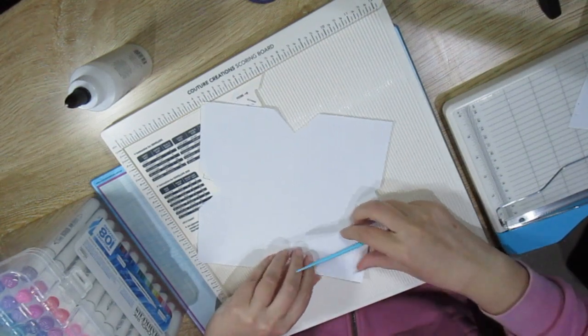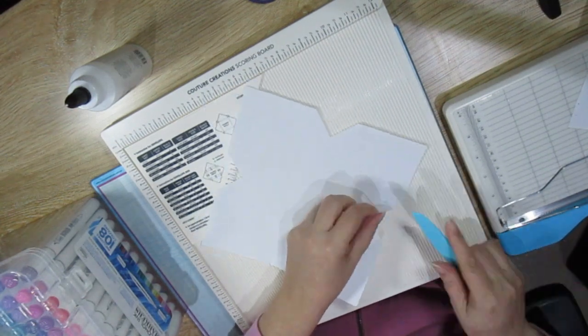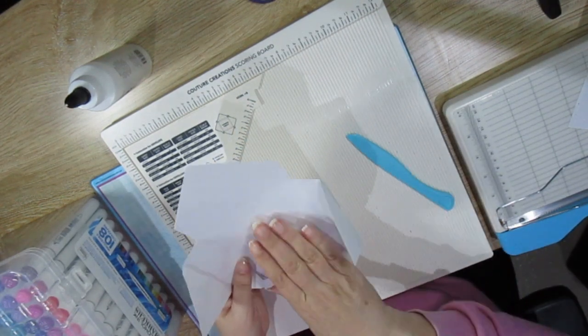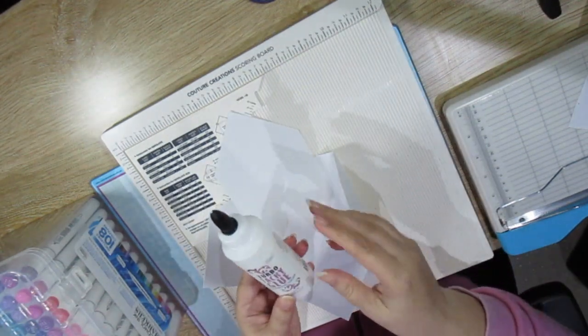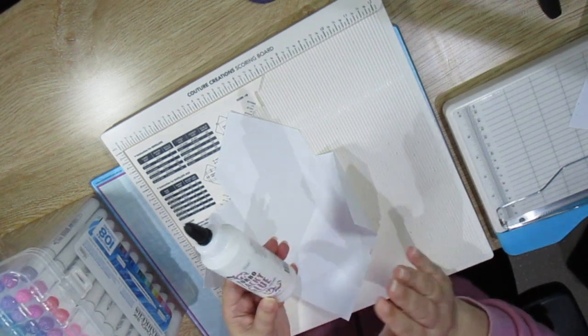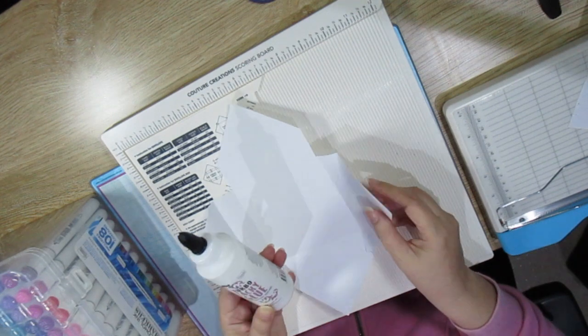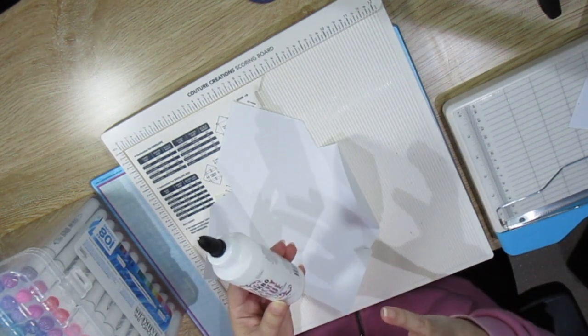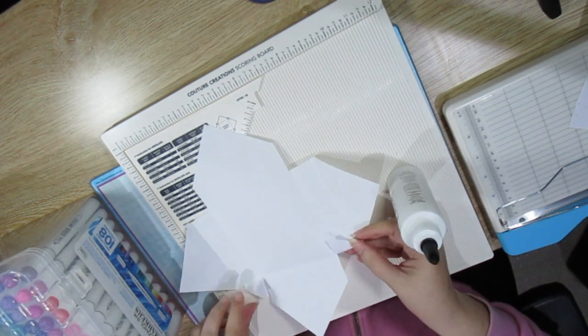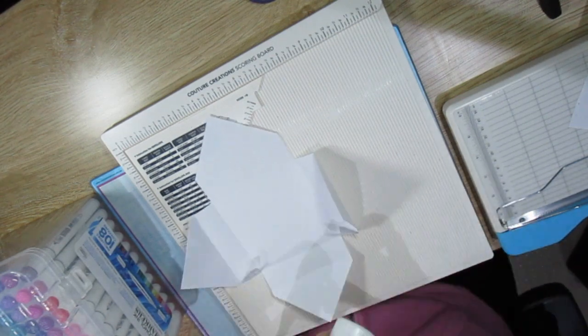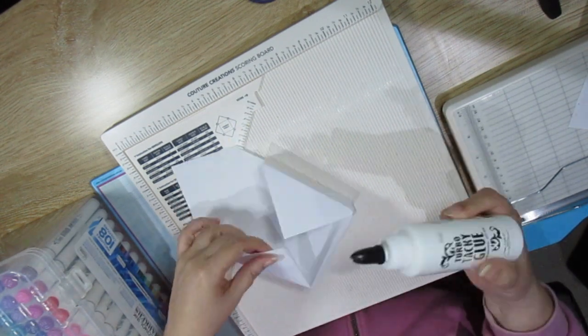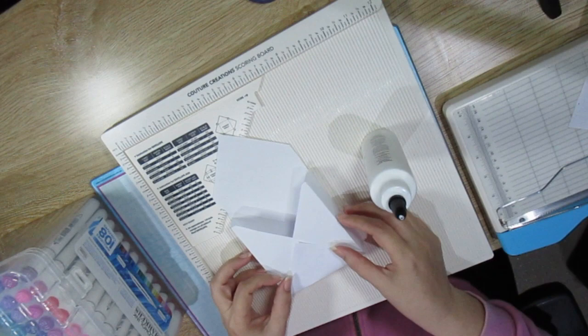So this is how your envelope box card will look like. I'm just going to fold the score lines. Now I'm going to use Kachur Creations turbo tacky glue. I find this glue is perfect for adhering your boxes and everything that you want to adhere quickly because this tacky glue dries quickly. I'm just going to adhere these flaps. Now I'm going to adhere these two. And now I'm adhering this.